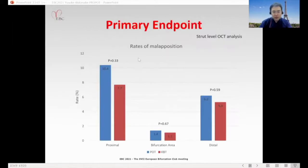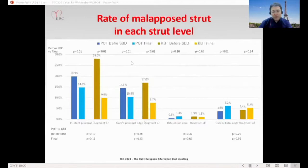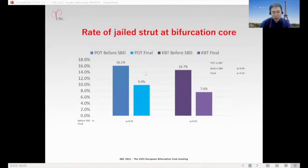For the primary endpoint, rates of malapposition were not different between the two groups in each stent segment, but were slightly higher in the POT group. At the final procedure, there was no significant difference between POT and KBT groups. Rate of jailed struts at bifurcation core: in the POT group, before side branch dilatation it was 16% and 10% at final. In the KBT group it was 15% before side branch dilatation and 7.6% at final. No significant difference.